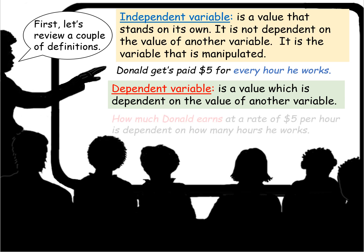For example, Donald gets paid $5 for every hour he works. Every hour he works is your independent variable. A dependent variable is a value which is dependent on the value of another variable. For example, how much Donald will earn at a rate of $5 per hour is dependent on how many hours he actually works.